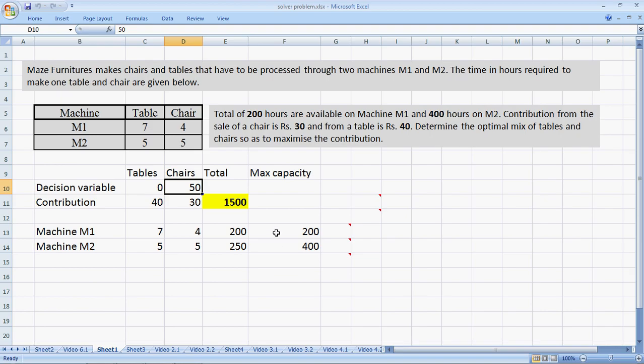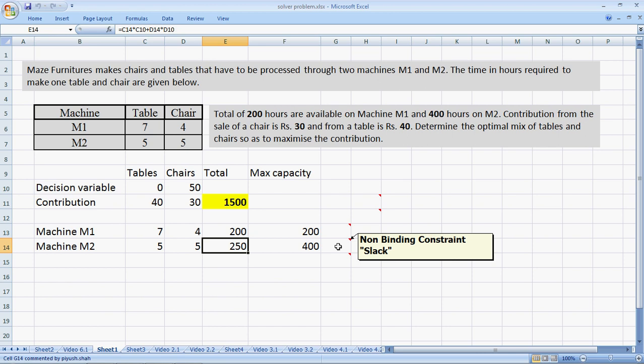Now let's look at the constraints. The resource M1, the maximum capacity is 200 units and we use up 200 units. So this is called a binding constraint. For machine M2, while there are 400 units available, we use up only 250 units. This is called a non-binding or a slack constraint.